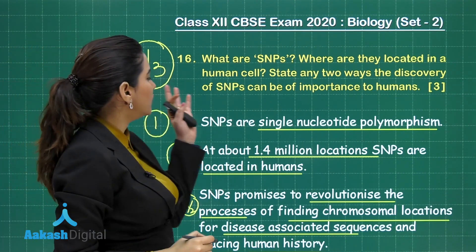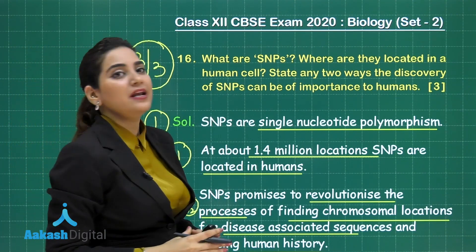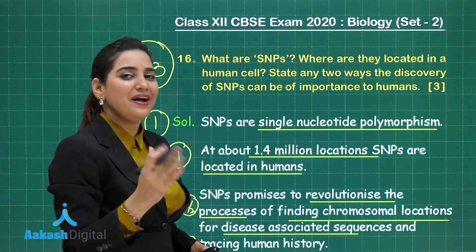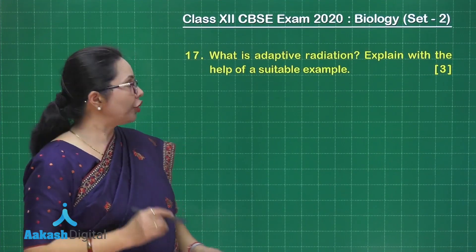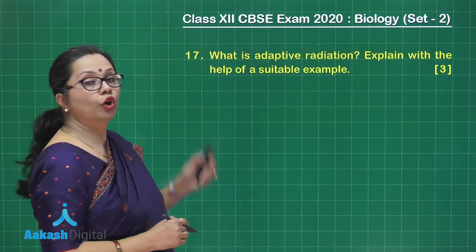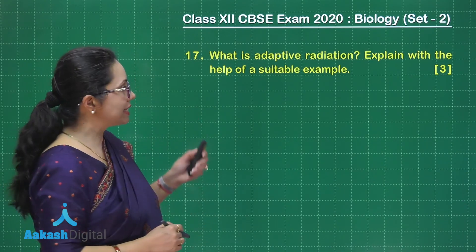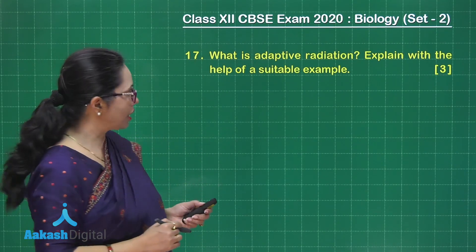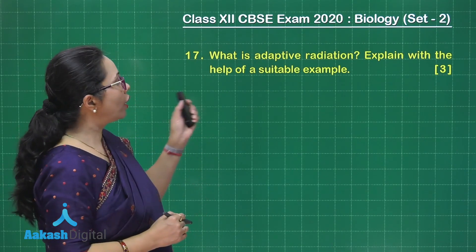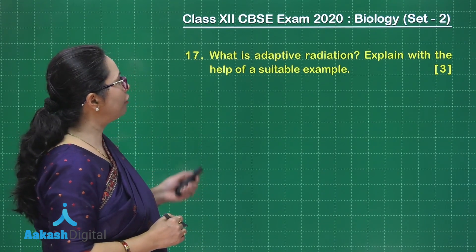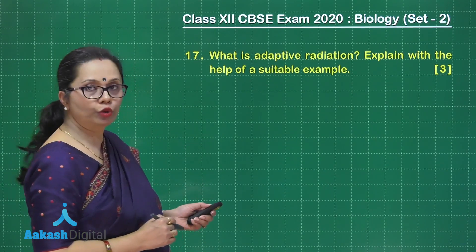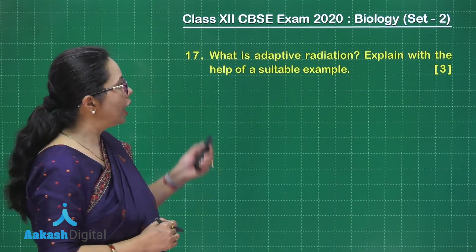And if you write all of this, you will get 3 out of 3 marks. That is question number 16. Now let us take up question number 17, which is: adaptive radiation — explain with the help of a suitable example.